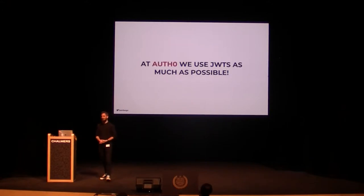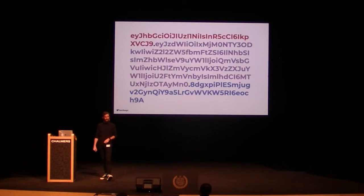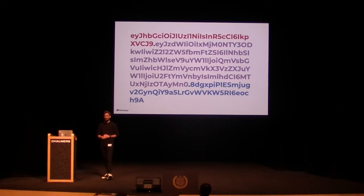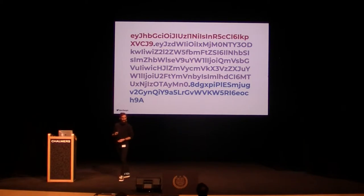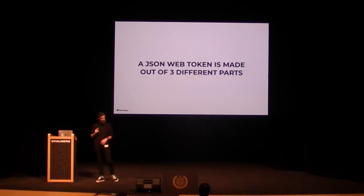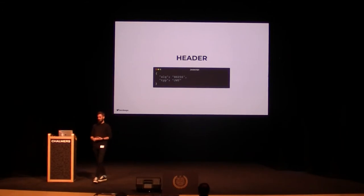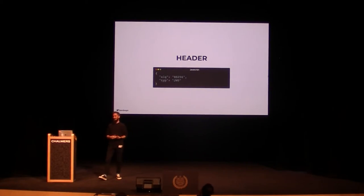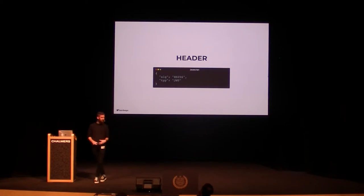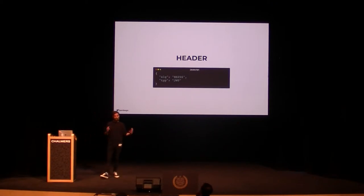At Auth0 we use JSON Web Tokens as much as possible, simply because we love them. As you can see from the different colors, there are three parts of a JSON Web Token. The first part is called the header, and it contains some metadata — some information about your JSON Web Token: which algorithm is used to sign it, and what type it is — it's a JSON Web Token. This information can be used to identify what it is and to know which algorithm you need to use to verify or sign the token.